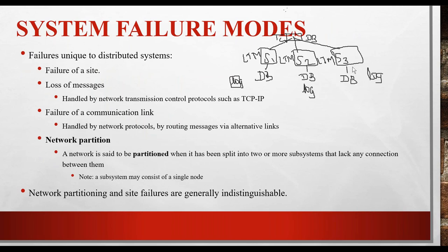You have two levels of distributed database — one is a centralized database which is being distributed across two or three different locations. If you are going to have a failure in your distributed database, the reasons for failure are either failure of a site, or lost messages due to network failure — messages being transferred between sites may be lost.